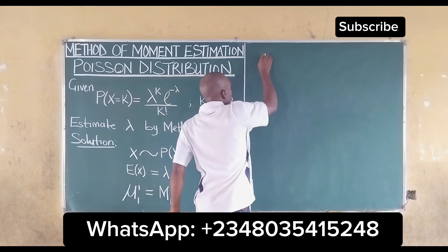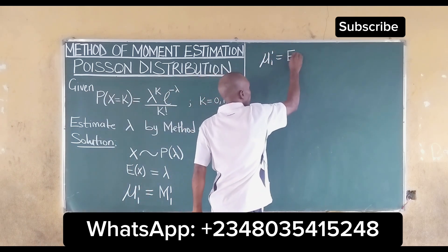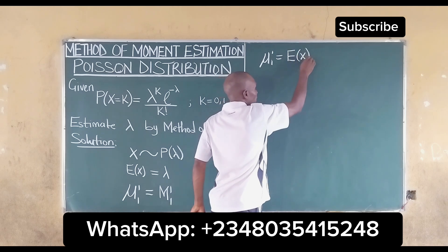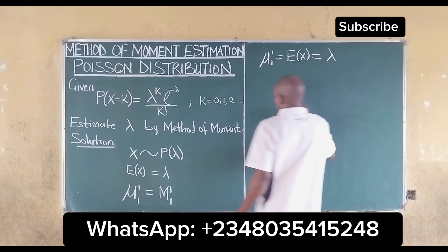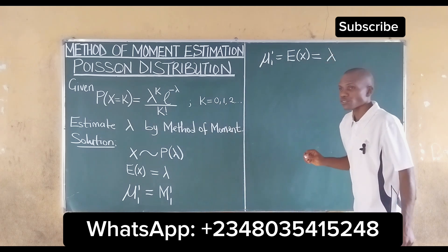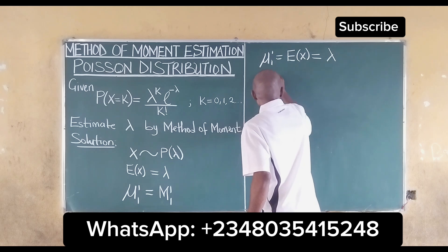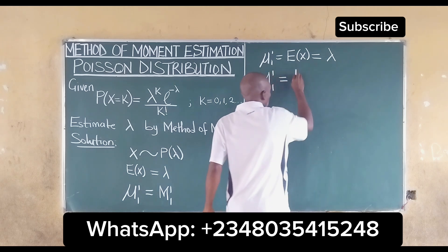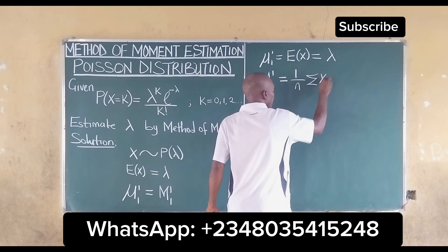The population mean is equal to the expected value of x, which is equal to lambda. Also, the sample mean is equal to 1 over n summation of x_i, i running from 1 to n.